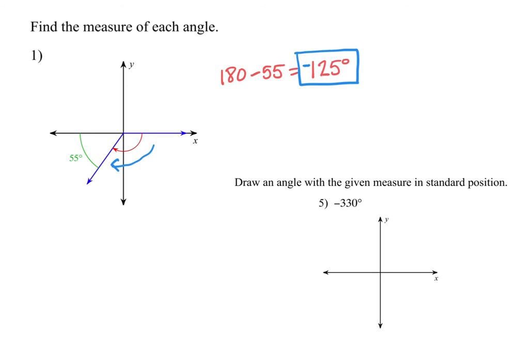You will also need to be able to draw angles given the measure in standard position. And so again, directionally negative is clockwise, positive is counterclockwise. This particular angle is negative 330 degrees. So when you do something like this, you want to keep in mind that you're going clockwise.